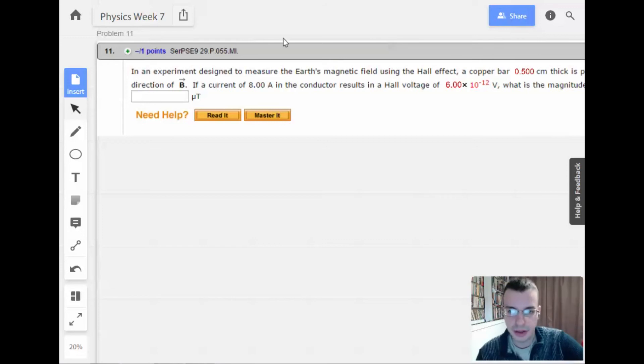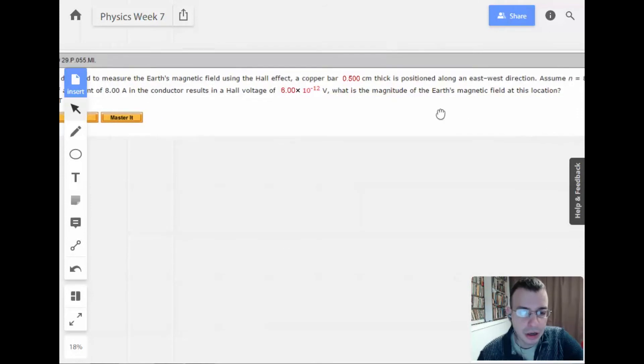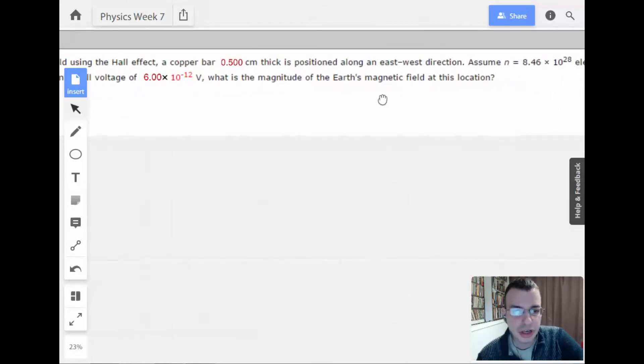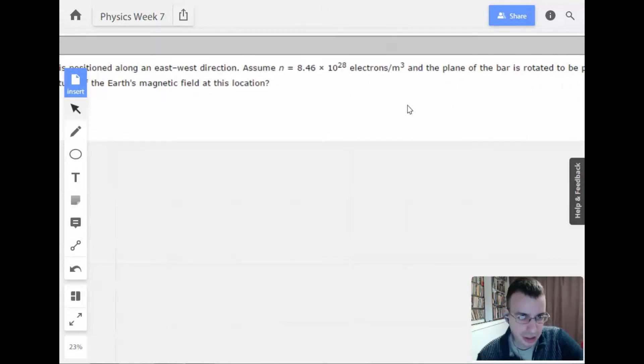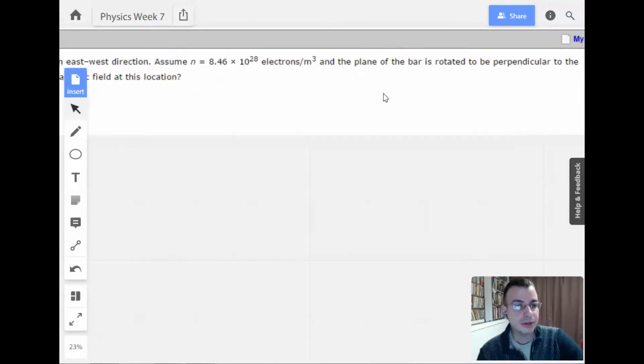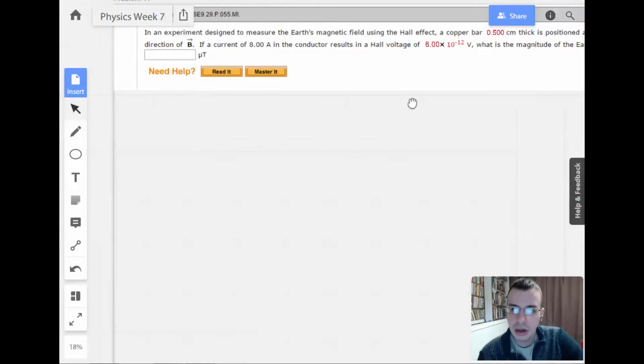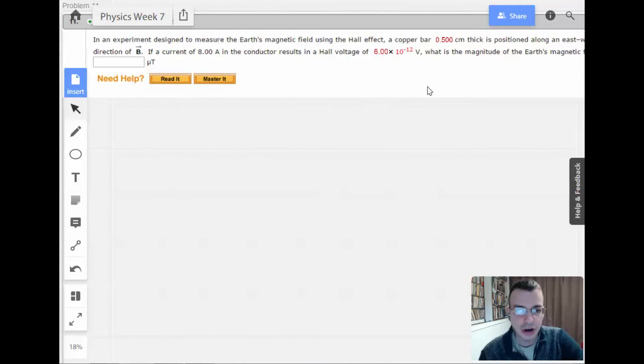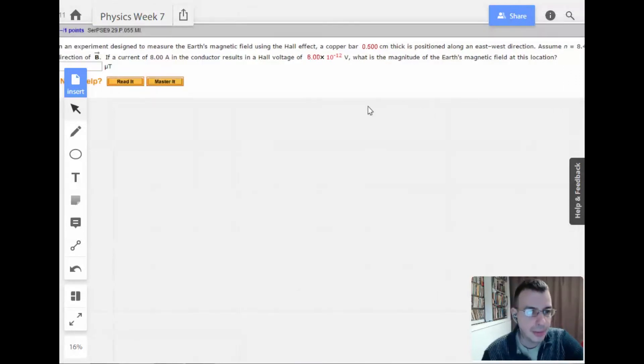Week 7, problem 11. An experiment designed to measure the Earth's magnetic field using the Hall effect. A copper bar, 0.5 centimeters thick, is positioned along an east-west direction. Assume 8.46 times 10^28 electrons per cubic meter. The plate of the bar is rotated to be perpendicular to the direction of the magnetic field. If a current of 8 amps in the conductor results in a Hall voltage, what is the magnitude of the Earth's magnetic field?